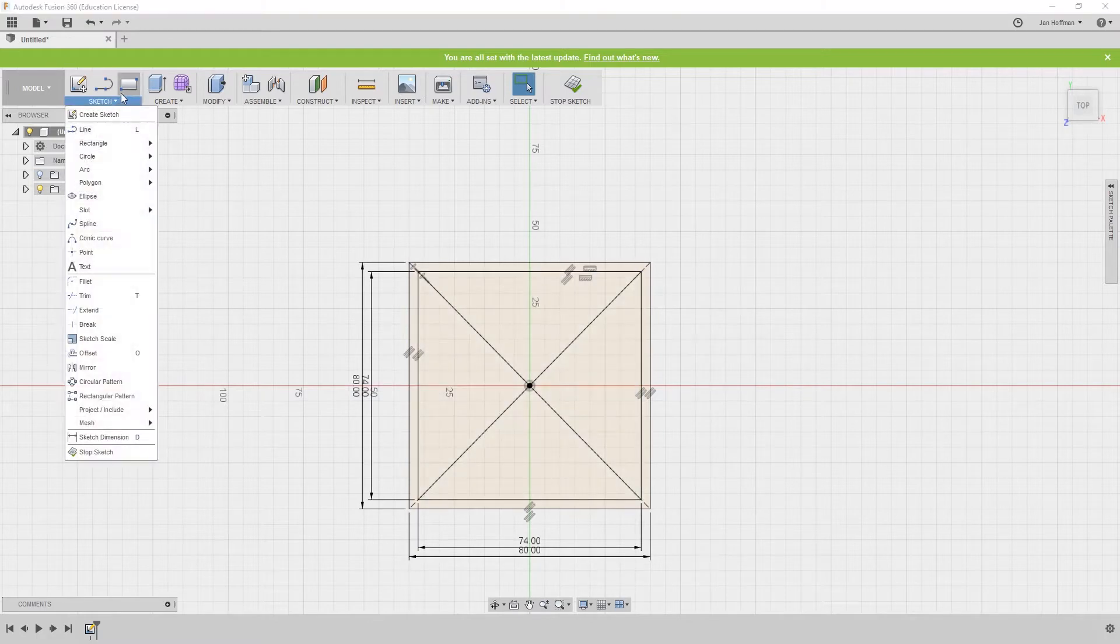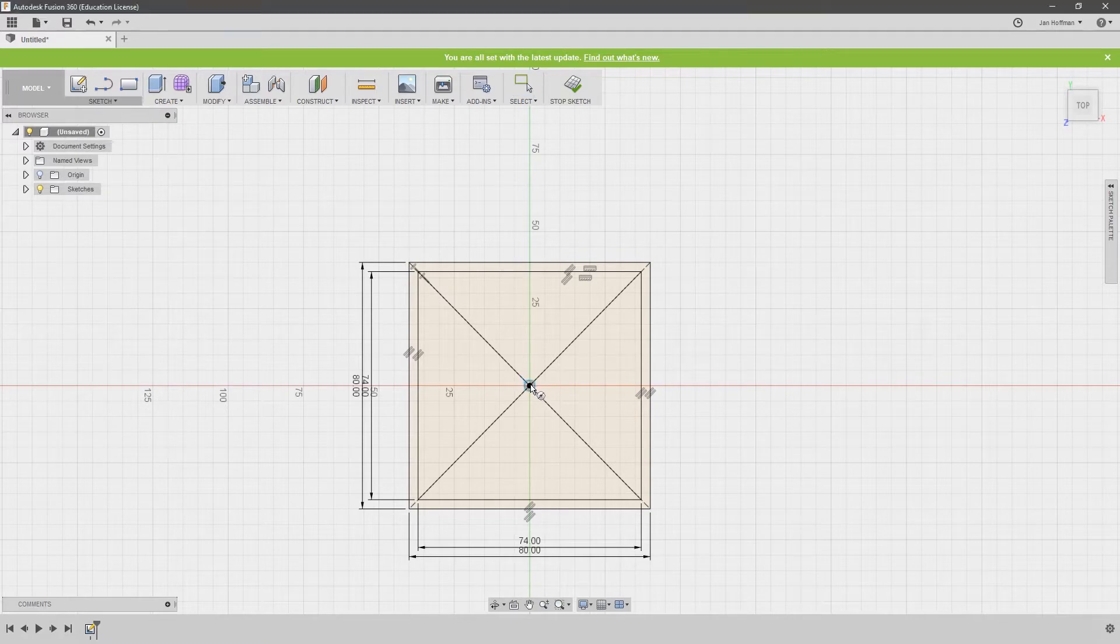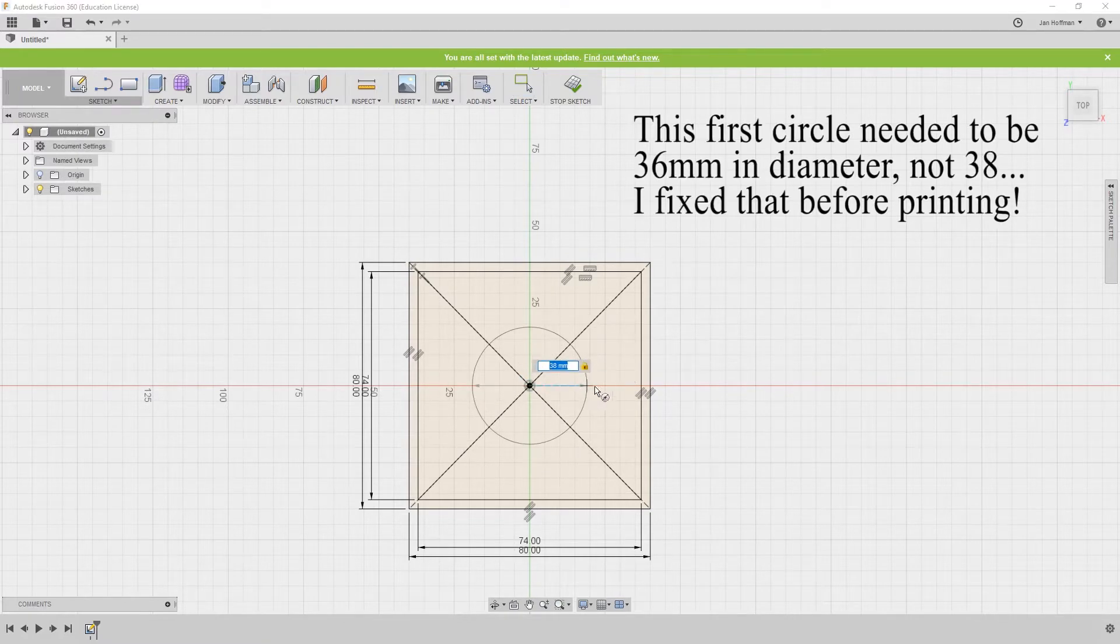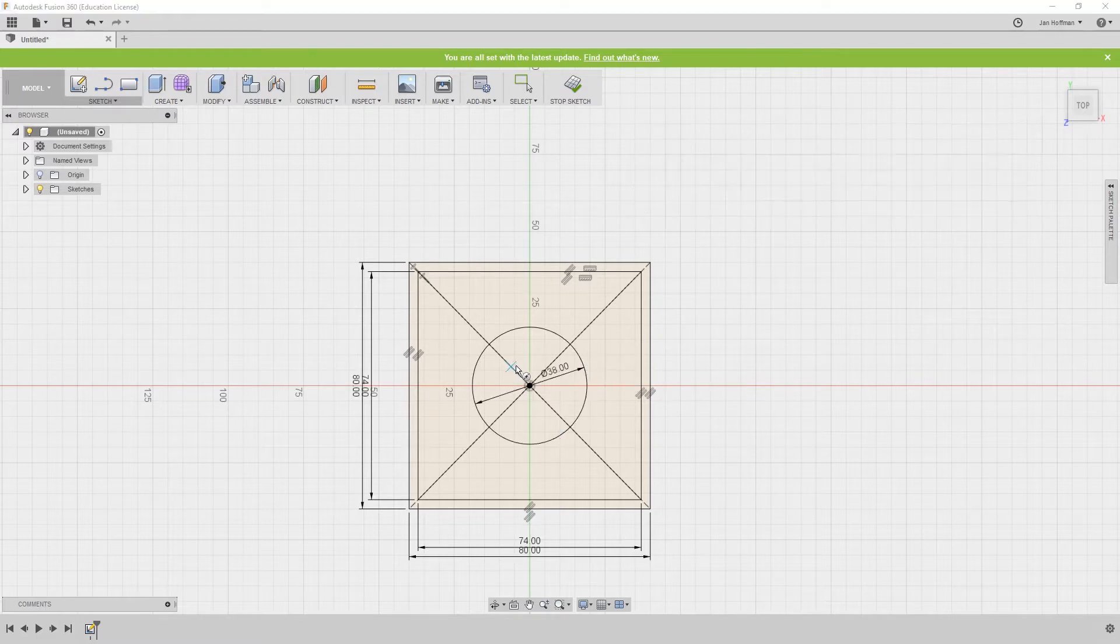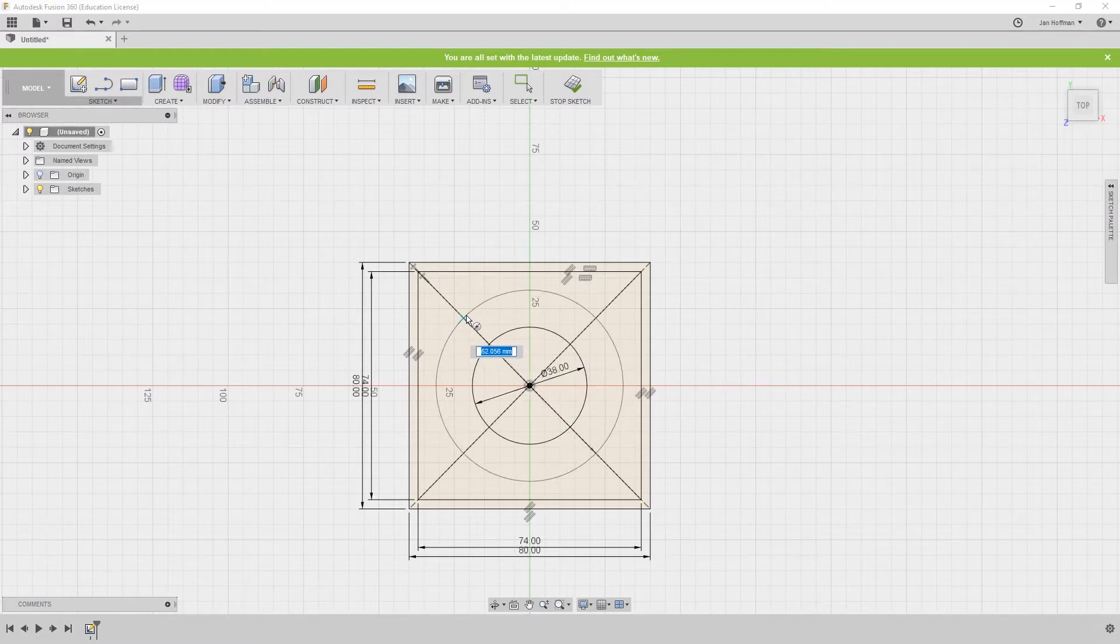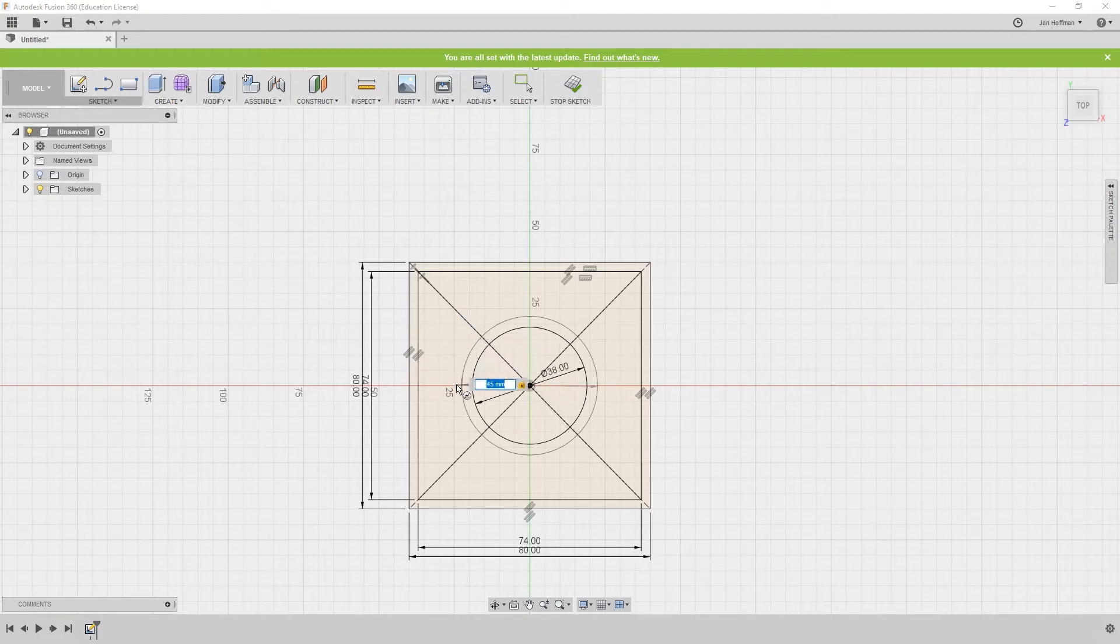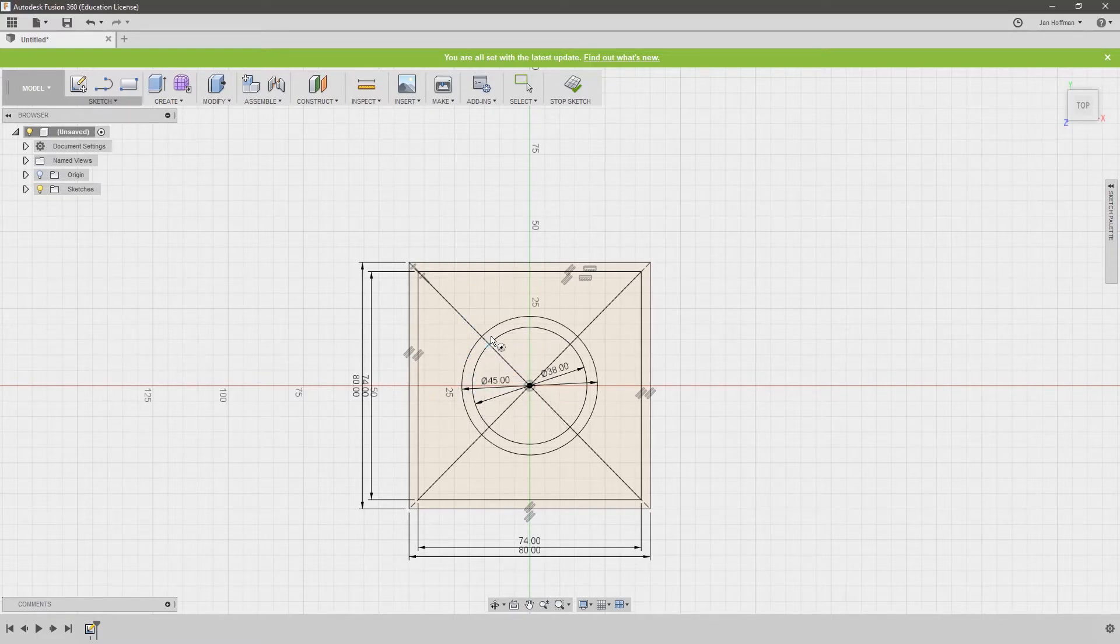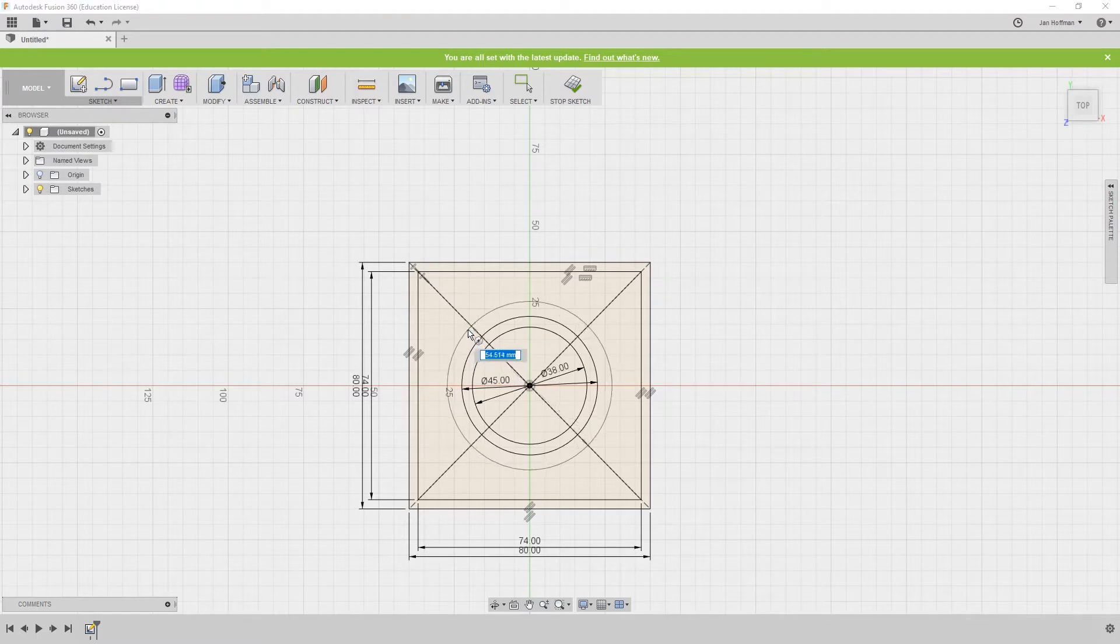And then let's start doing the circles, so we'll choose the center diameter circle, and start with 36 millimeters, it should be, not 38 as I'm doing here. And then 45, and a third one for that outside diameter.